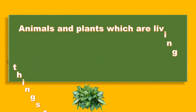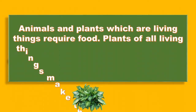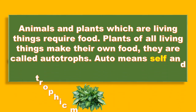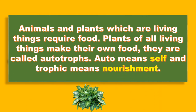Animals and plants, which are living things, require food. All living things require food. Plants, of all living things, make their own food — therefore they are called autotrophs. The reason they are called autotrophs is because they are able to make their own food. In the word autotroph, 'auto' means self and 'troph' means nourishment.